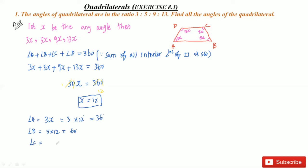Angle C: we have 9x, so 9 times 12 equals 108 degrees. And angle D, we have 13x, so 13 times 12 equals 156 degrees. That's it. So we got all the angles.